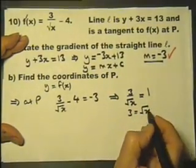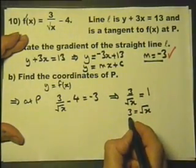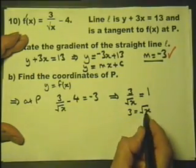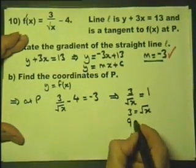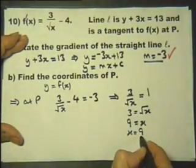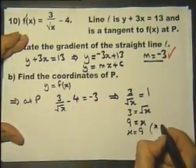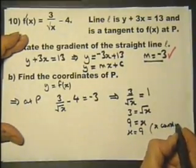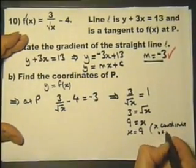Now let's square both sides, and that will give us 3 squared equals the root of x squared, which will give us 9 = x. In other words, x = 9. So that is the x-coordinate of P.